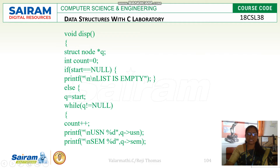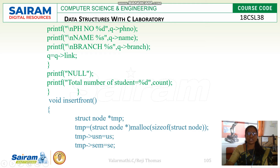We display elements one by one: USN equals Q->USN, SEM equals Q->SEM, phone number equals Q->phone number, name equals Q->name, and Q->branch. Likewise, all structure member variables are displayed here, and this while loop will continue until the end. Then case 3 is insert a new node at the front.